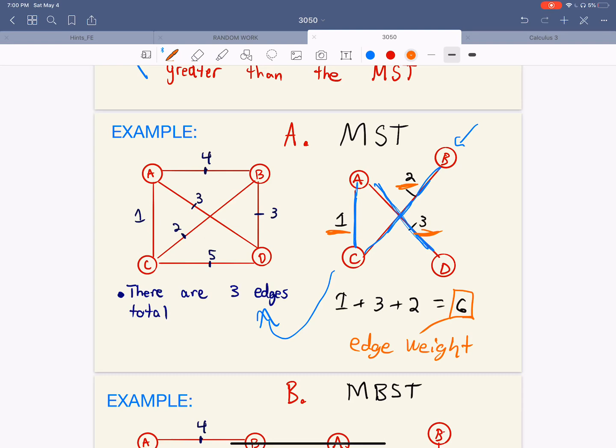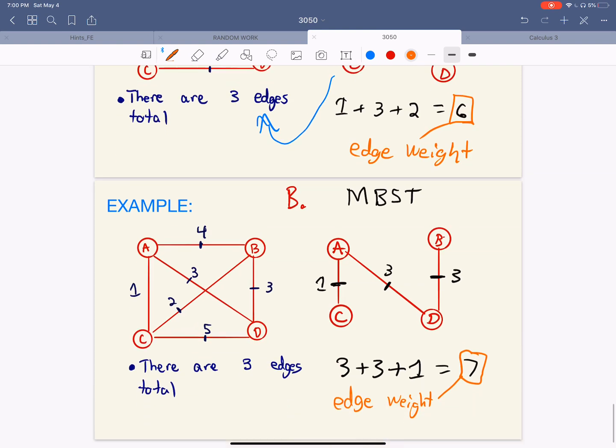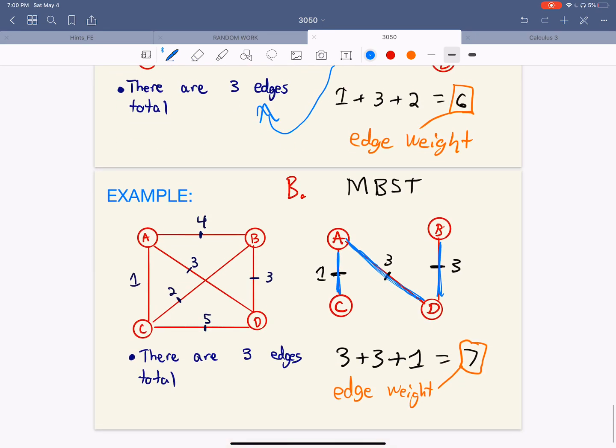So we need to know that as well for the minimum spanning tree because the minimum bottleneck spanning tree is this right here. And we use the same amount of edges. So we still use three edges compared to three up here as well.